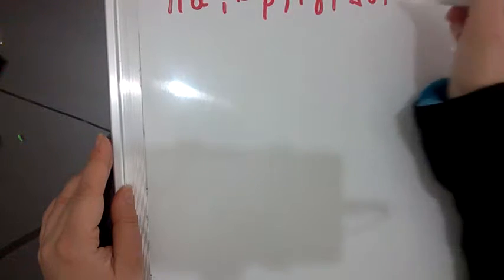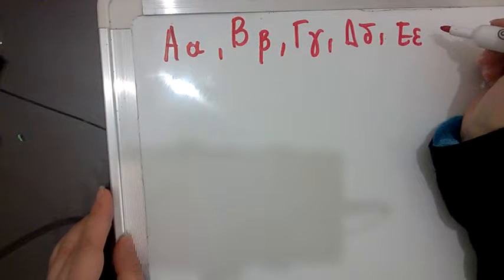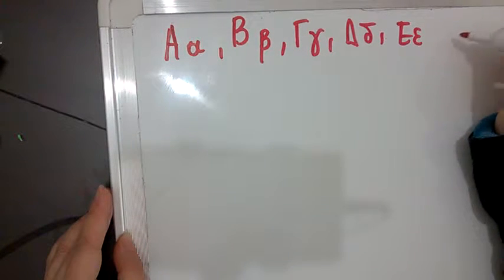Let's start with the alphabet. Alpha, Beta, Gamma, Delta, Epsilon. So you can see: A, V, G, D, E.